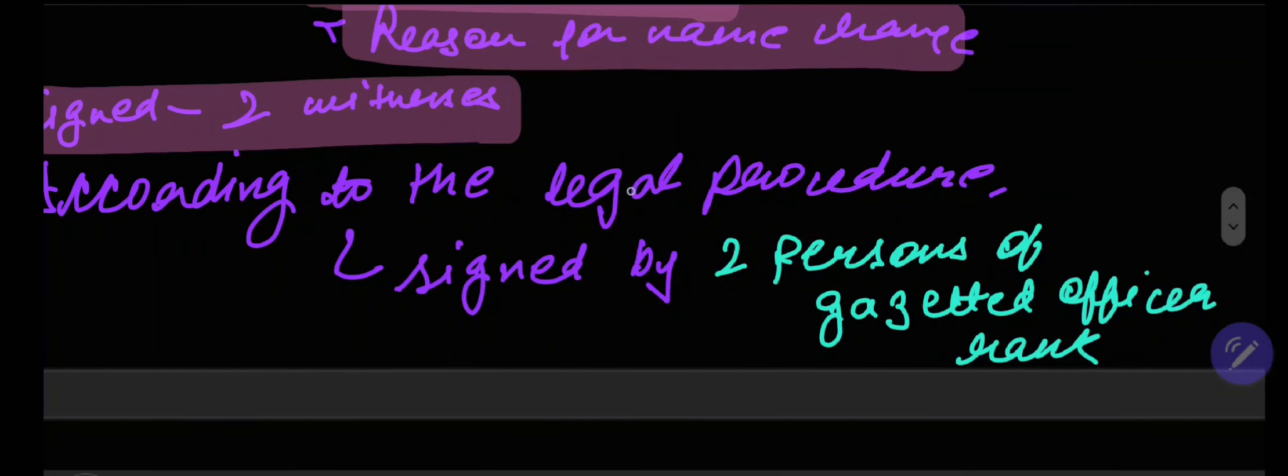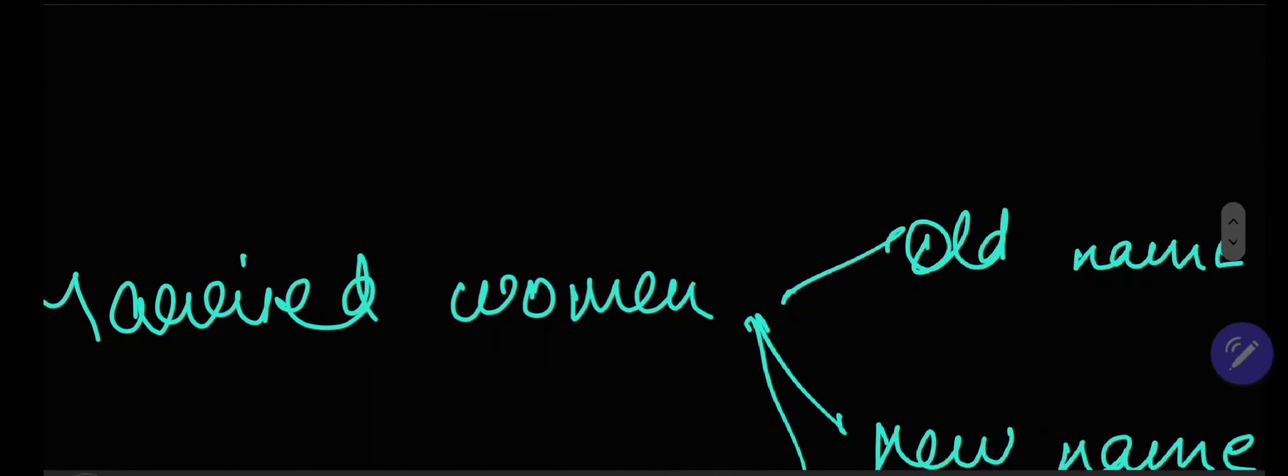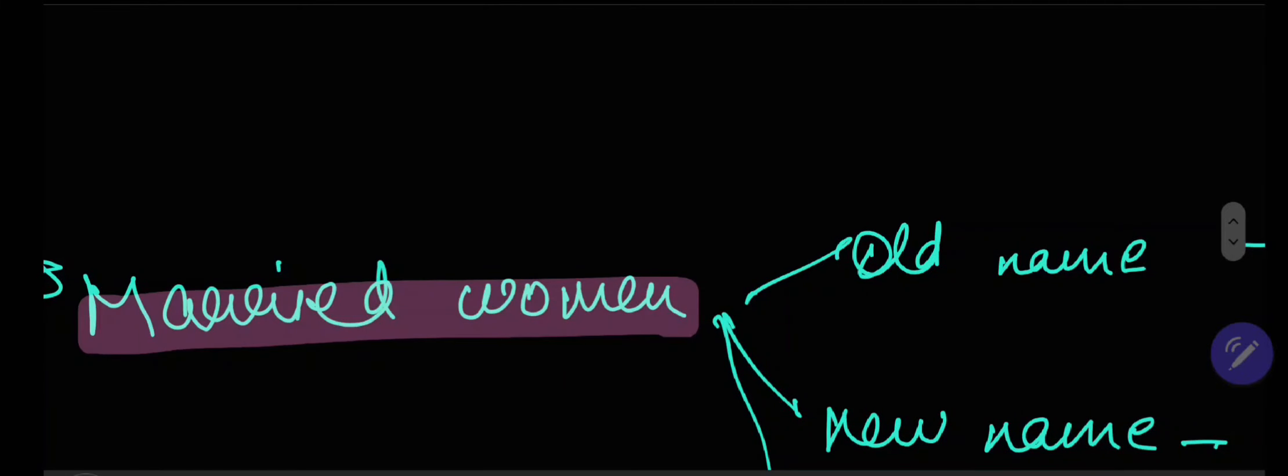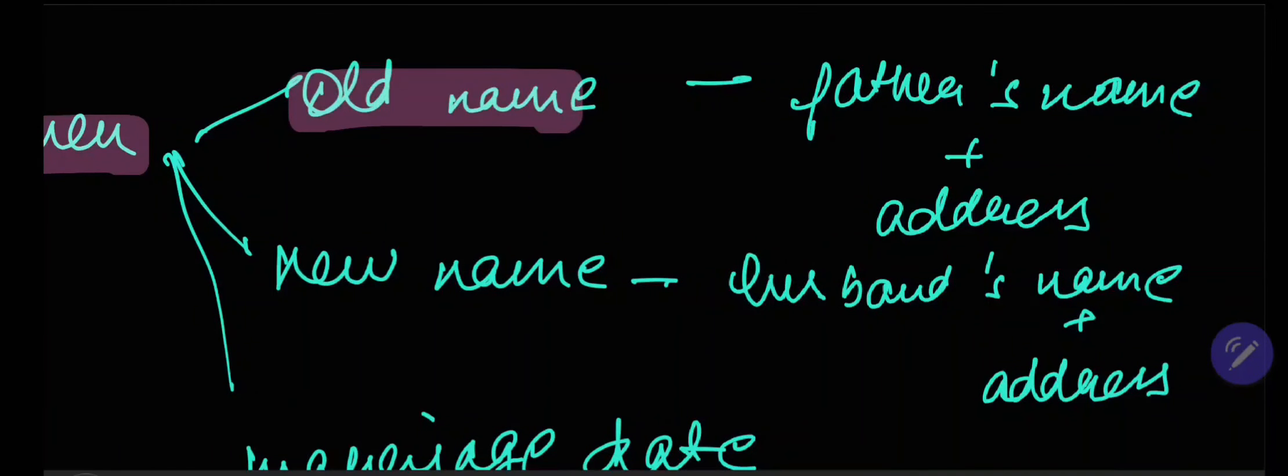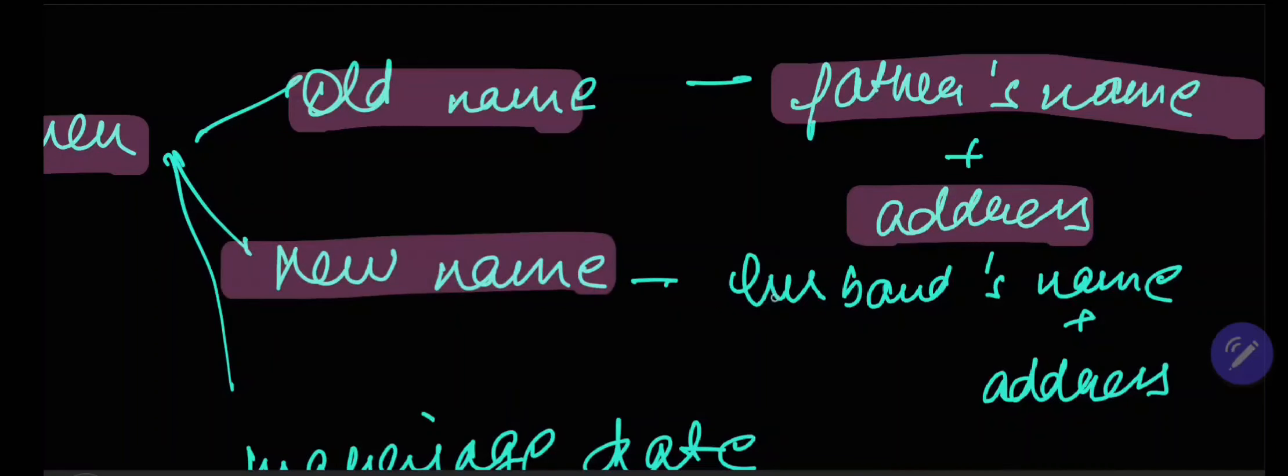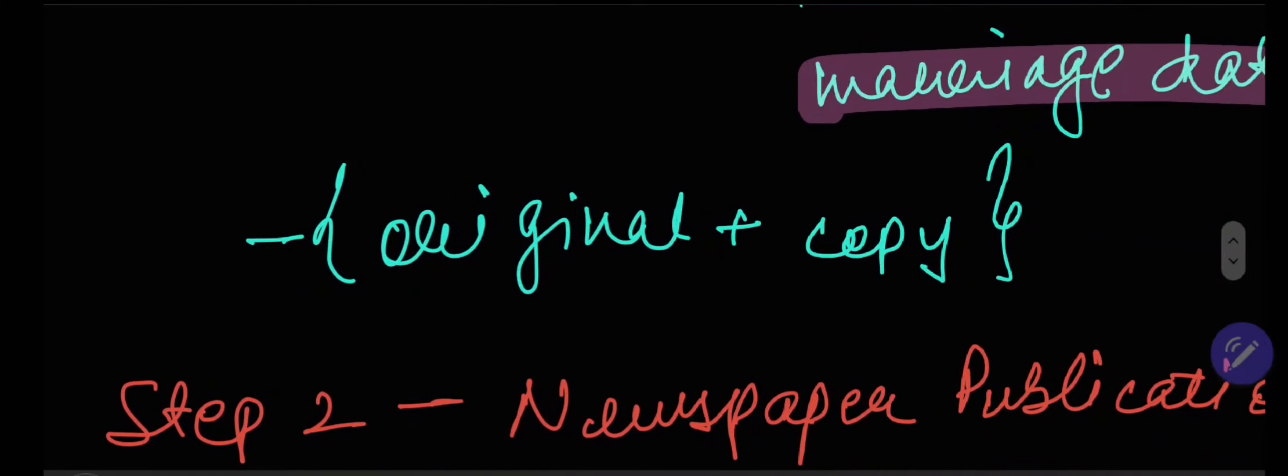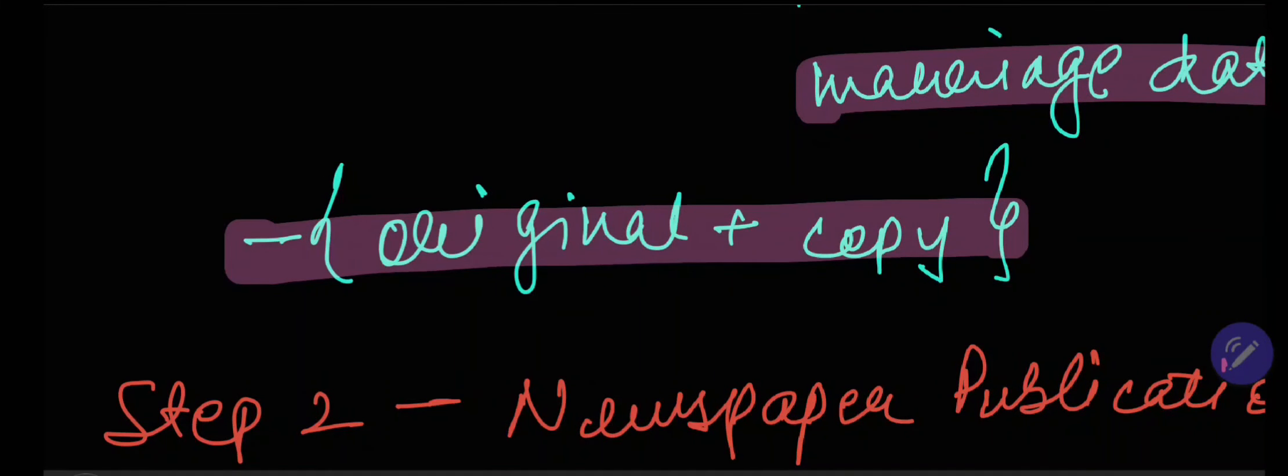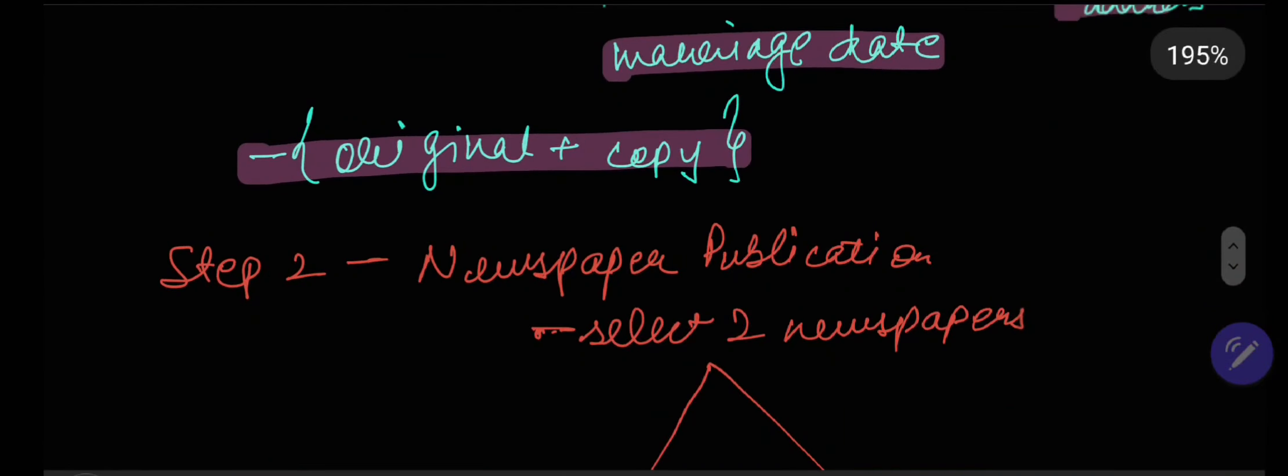And according to the legal procedure, it needs to be signed by two persons of gazetted officer rank. Now, for married women, if you're talking about married women, then they need to provide their old name, like the evidence of their old name, and documents verifying their father's name, father's address. They need to provide their new name, again, documents supporting their husband's name, husband's address, and the date of their marriage. Again, point to be noted, please, please, please keep the original as well as the photocopy documents, photocopy of all the above stated documents.